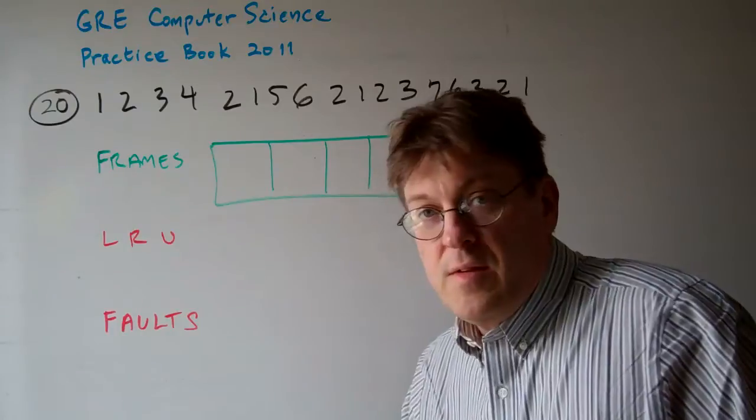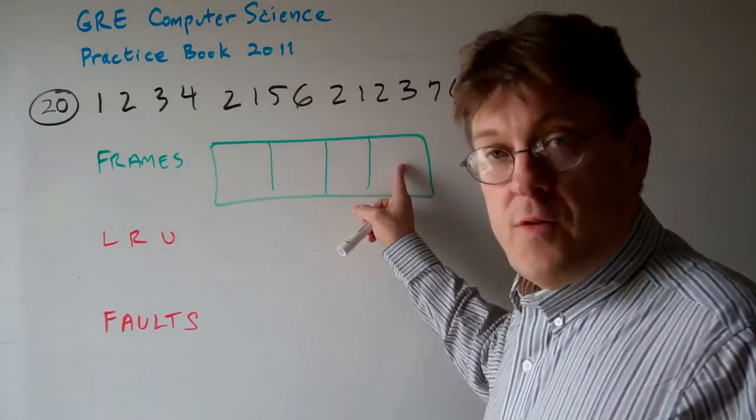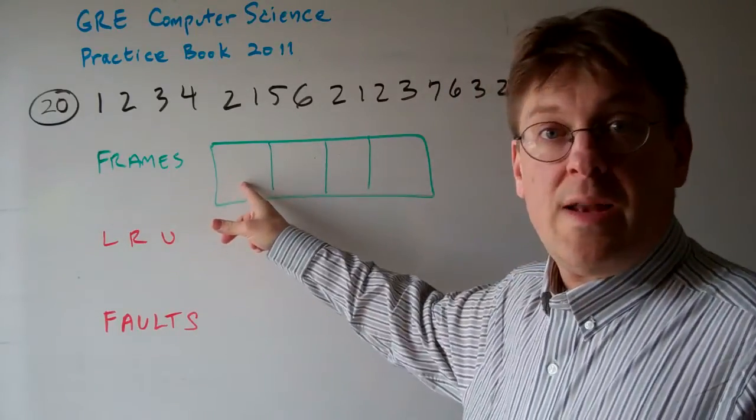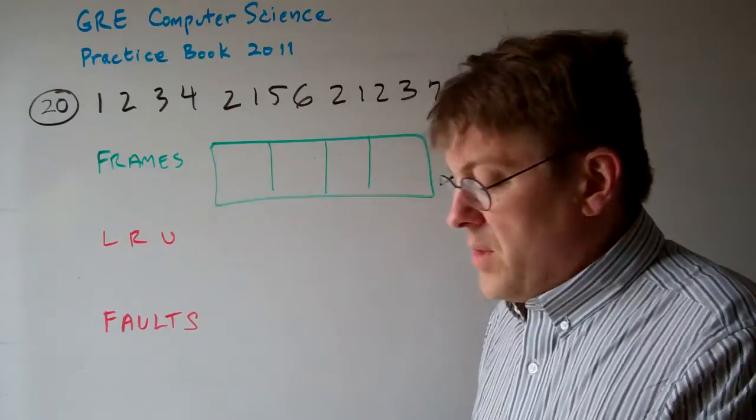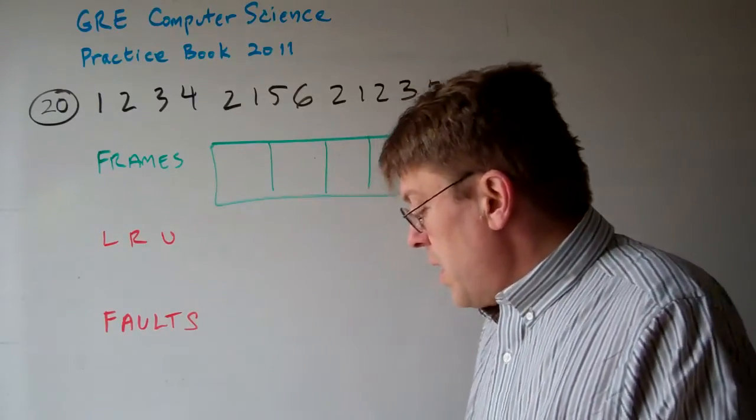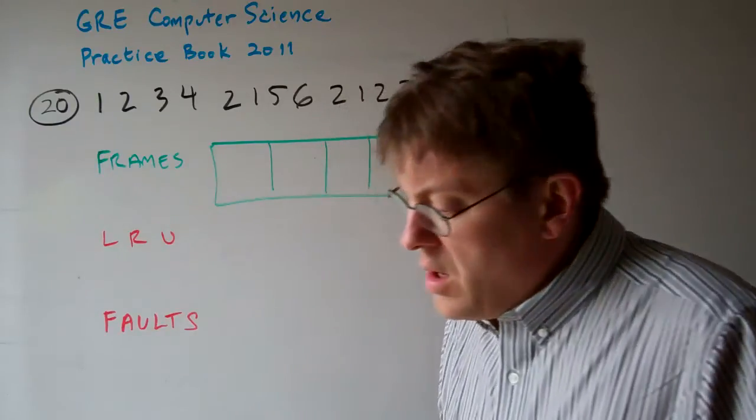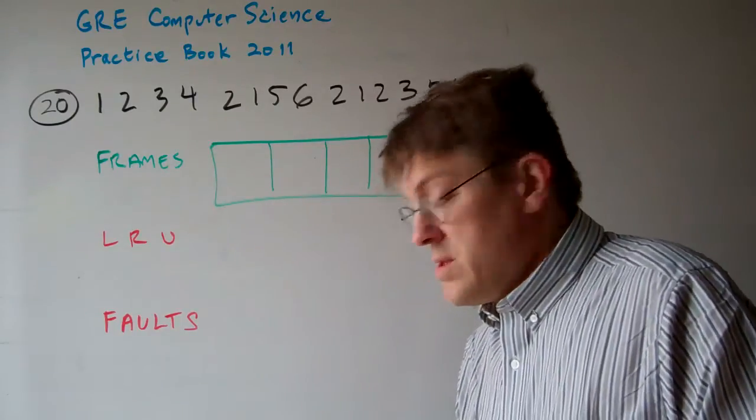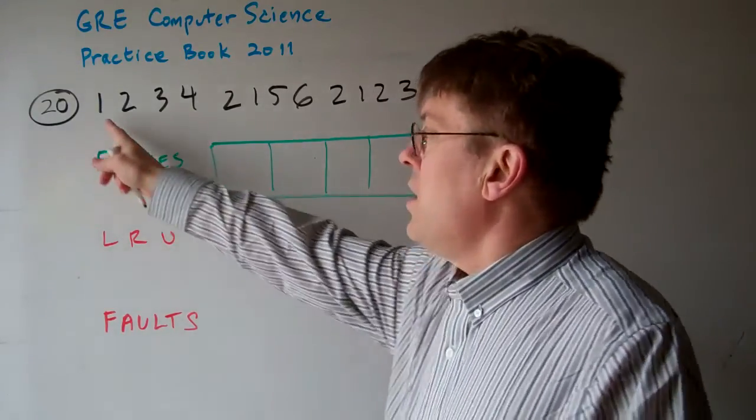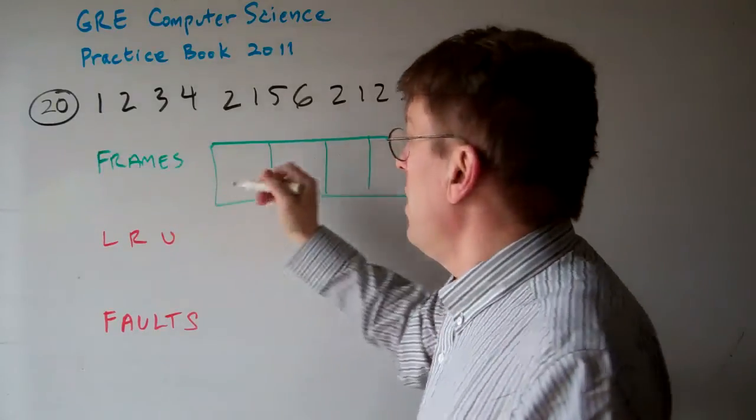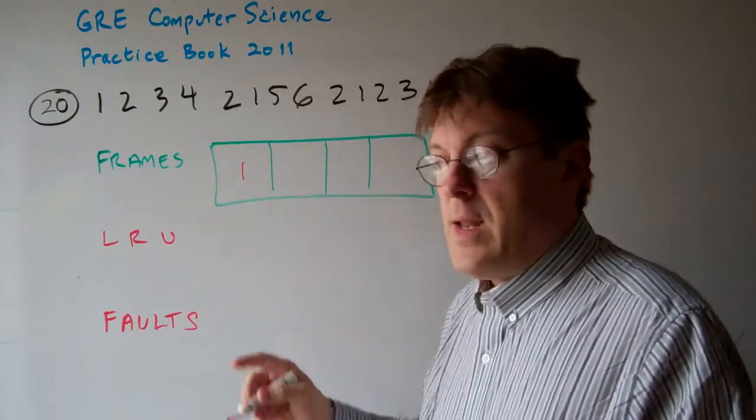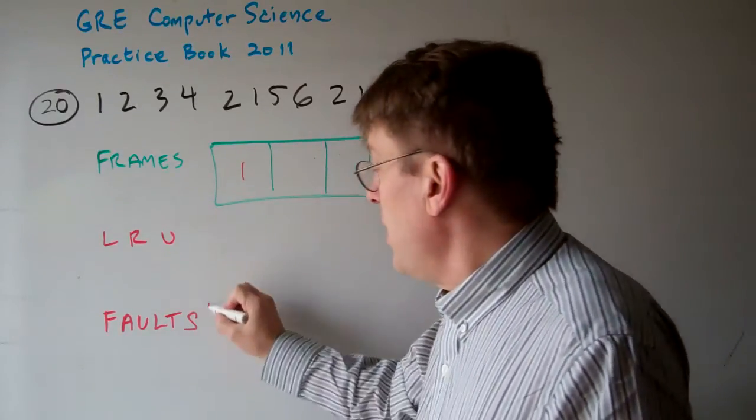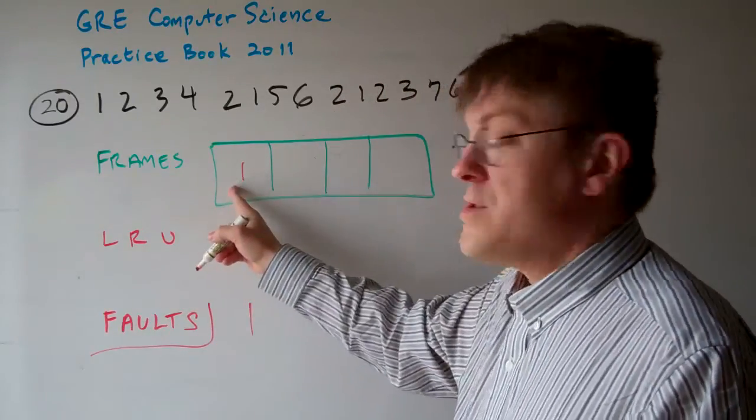Now, a simple way of looking at this is you have four frames. You get a page fault whenever the frame that you want is not in one of these four. So let's see what happens. Right now it says there that there's no frames, that all the frames are initially empty. If we start off with frame number one, this goes into this one. And now one is the least recently used. It's the only one that's been used. How many faults have taken place? One, because that frame was not in here.